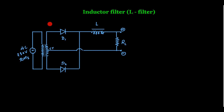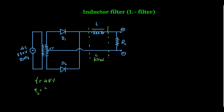Looking at the circuit diagram: we have a full-wave rectifier, and the output of the full-wave rectifier is connected to the inductor. This inductor is connected in series with the load resistance RL — remember, the inductor is always connected in series with the load. This part of the circuit is the filter circuit, specifically an L filter. When we introduce an inductor filter, the ripple factor changes. Without filter, the full-wave rectifier has a ripple factor of 48%, but when we introduce an inductor, we need to identify the new ripple factor and what factors it depends on.